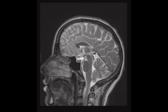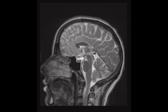We look at the corpus callosum best in the sagittal view, and we see it right here. This is the corpus callosum, and it is abnormal — it's very small. The front, down at the bottom, is called the rostrum — it's small and blunted. This is the genu, where it makes a turn like the knee, and that looks normal in size. This is the body; the front of the body looks pretty good, but the posterior body back here is very small and very thin. And the back part, the splenium, is very small. From front to back, it's too small as well.